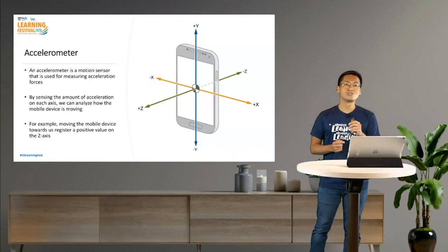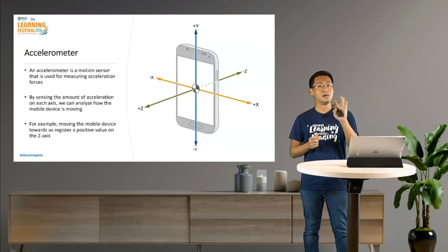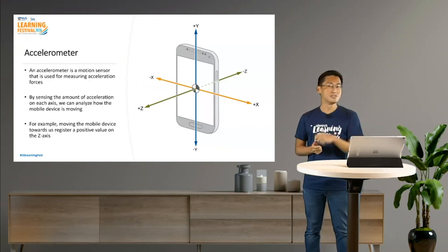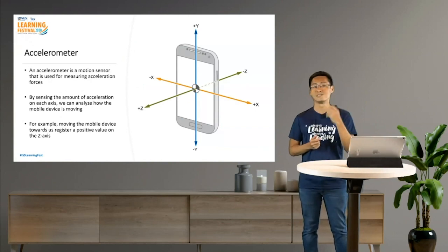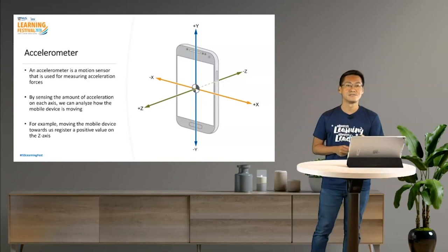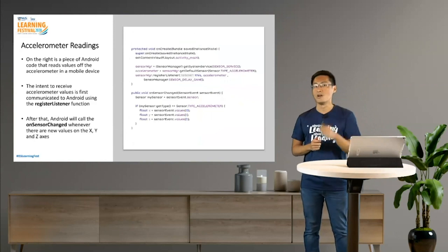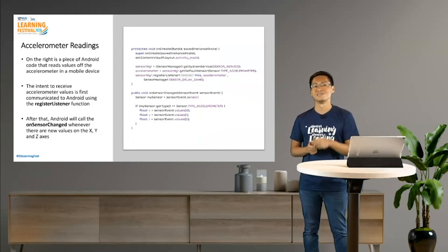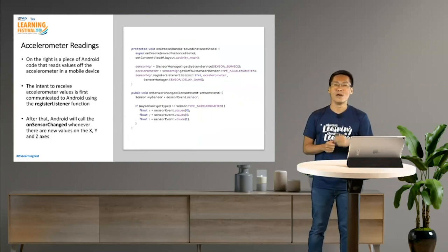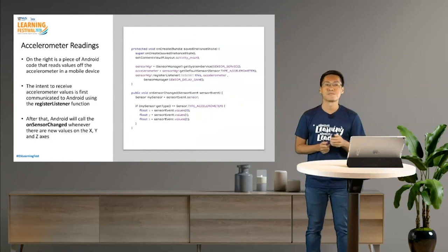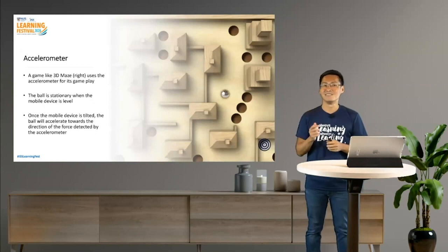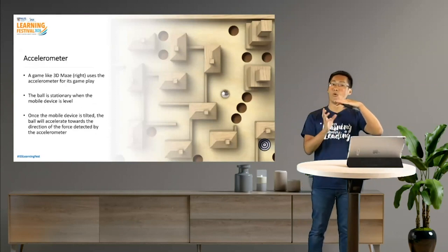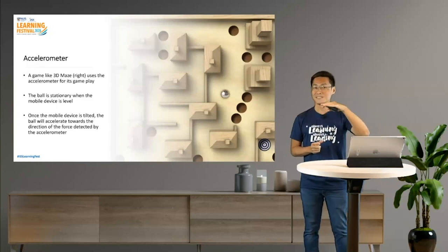The accelerometer is a motion sensor used for measuring acceleration forces. By sensing the amount of acceleration on the X, Y, and Z axes, we can analyze how the mobile device is actually moving. For example, moving the mobile device towards us registers a positive value on the Z axis. A piece of Android code reads the accelerometer values: first, we register our intent to receive accelerometer values; then Android calls us whenever it detects a tilt. A game like 3D Maze uses the accelerometer for gameplay — the ball is stationary when the device is level, and once tilted, the ball accelerates towards the tilt.